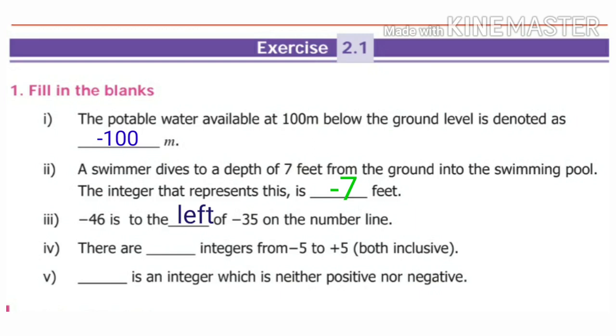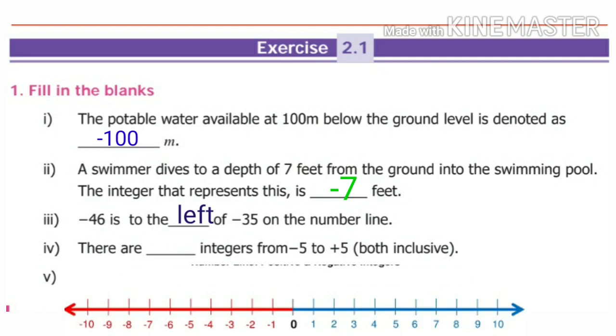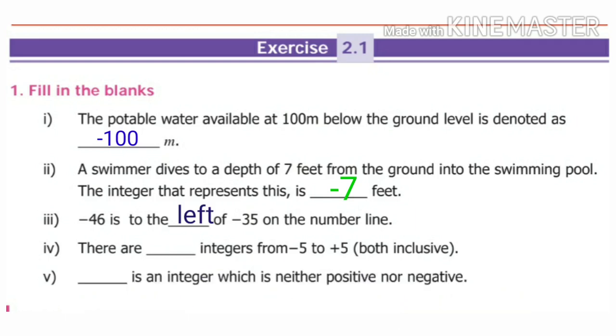Fourth: there are dash integers from minus 5 to plus 5. From minus 5 to plus 5, there are 10 numbers plus zero, which equals 11 numbers. So, there are 11 integers from minus 5 to plus 5. Fifth: dash is an integer which is neither positive nor negative. The answer is 0.